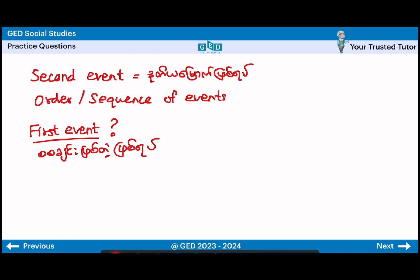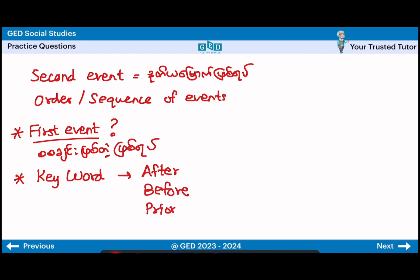The second event is the first event, the first event is the second event. We are down to the first event, with the first event brought up. This event will give us the action of the second event, and the second event was the second event source. Next, this is the final step.